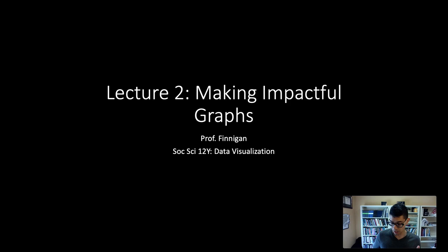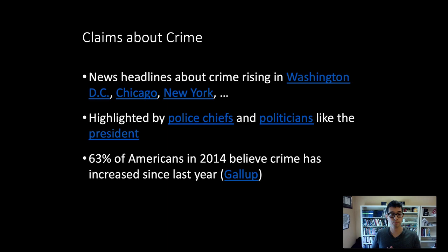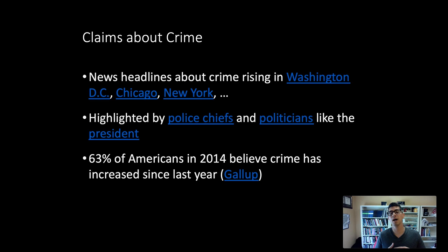The example we'll use for thinking through good and bad visualization is analyzing crime rate data in the United States over time. A data visualization would be really helpful here because there are a lot of perceptions around crime as something that increases alarmingly over time — a sentiment that appears in the news, in public statements from politicians and police chiefs, and in common public discourse.